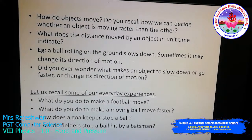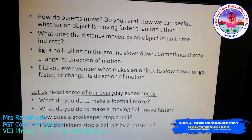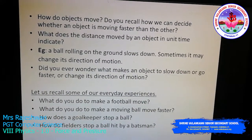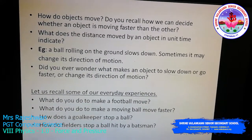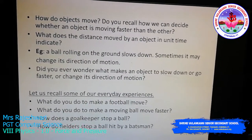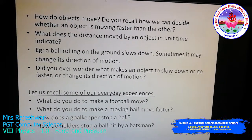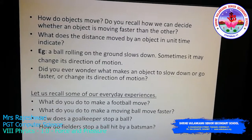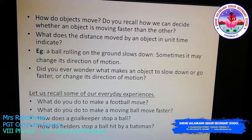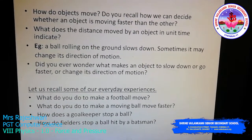Sometimes the ball may change its direction of motion. The ball you roll on the ground may go in a straight line, or it may change direction. It depends on the force you apply on the ball. Did you ever wonder what makes an object slow down, go faster, or change its direction? Obviously, it is the force and pressure you apply on the object.